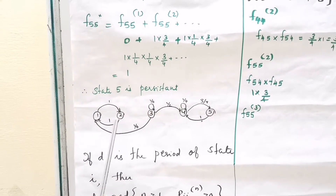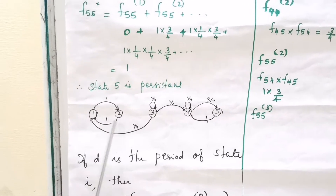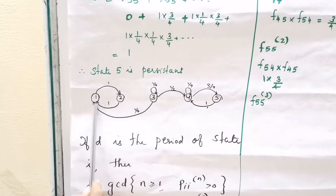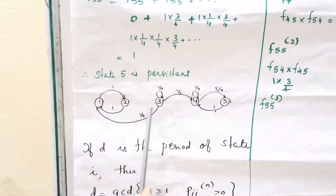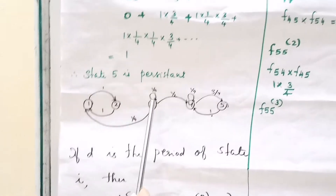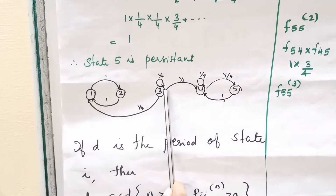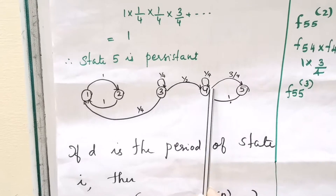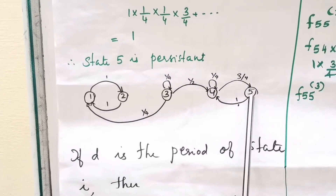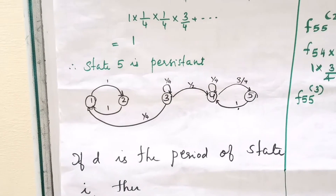From the figure, it is clear that 1 to 2 is possible and 2 to 1 is possible. Also 3 to 1, 3 to 3, and 3 to 4 are possible. Then 4 to 4, 5 to 4, and 4 to 5 are possible.